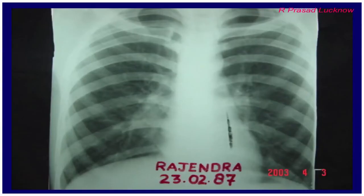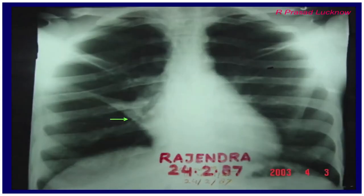This is another case — Mr. Rajendra — who had similar complaints and hardly any finding on chest X-ray, but we did the lordotic view and found the same triangular shadow in the paracardiac area, similar to middle lobe collapse.